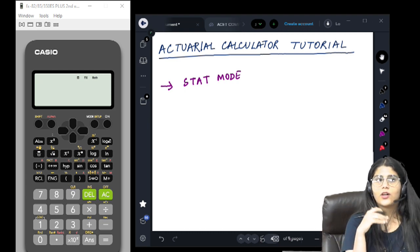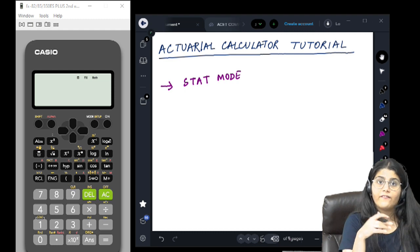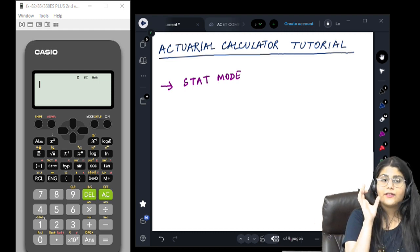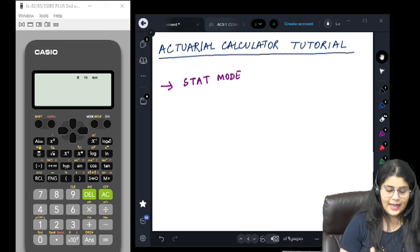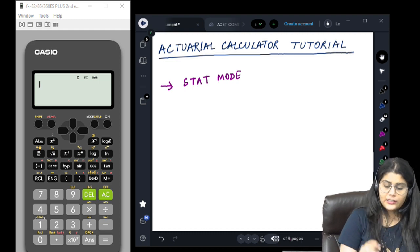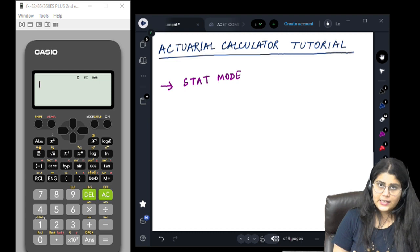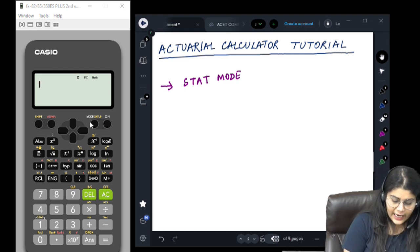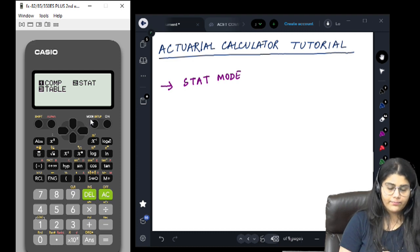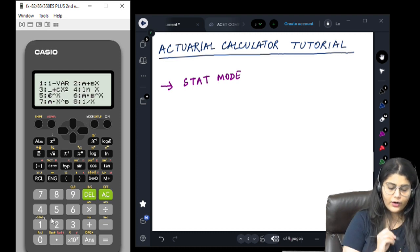This is not something which you might be using very frequently, but for certain topics and calculations it can come very handy to you. First of all, to work with the stat mode we have to enter the stat mode. We have the mode button beside the on button and we press 2 for stat mode.